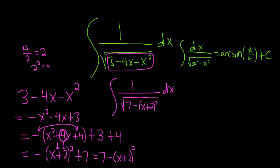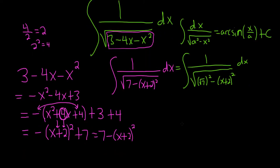So you see the a, let me rewrite this in a nice way, is going to be the square root of 7 because we can write it like this: square root of 7 squared minus (x plus 2) squared dx. So your a will be the square root of 7. The only thing left to do here maybe would be to make a u substitution.